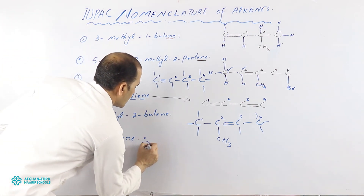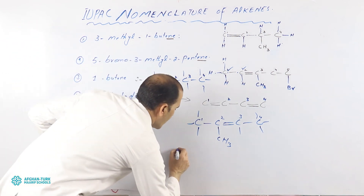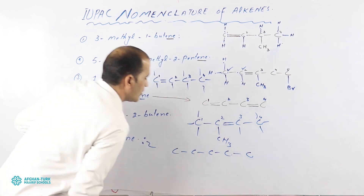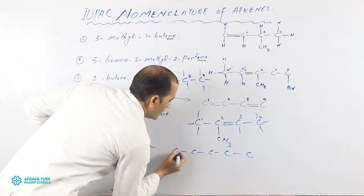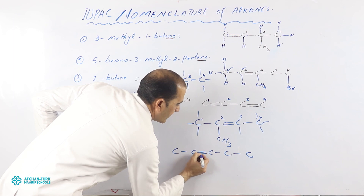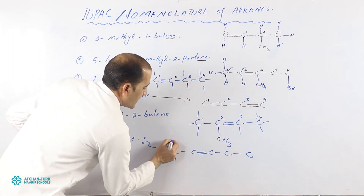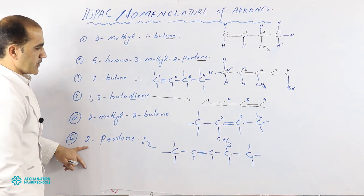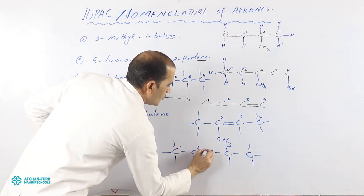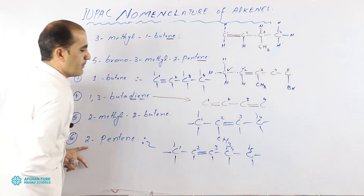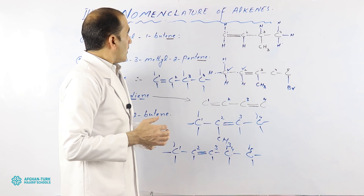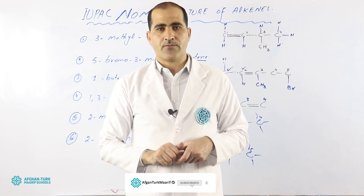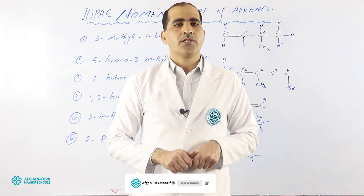The last example is 2-pentene. 'Pent' means five carbons: one, two, three, four, five. '2' means on the second carbon there is a double bond between the carbon atoms. Attach all the remaining carbons with hydrogen atoms. That is enough for today — subscribe to our channel for more informative videos about organic chemistry. See you next time, bye bye!